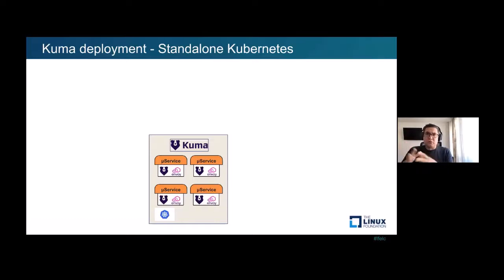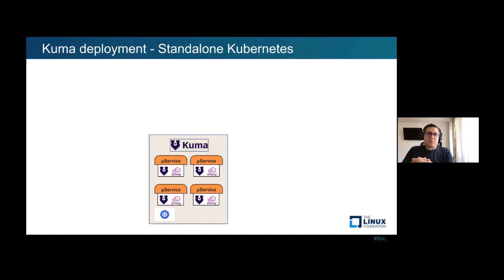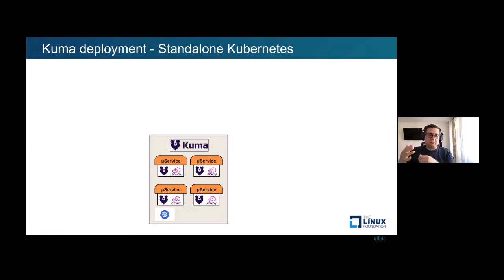The most basic deployment is standalone Kubernetes. You deploy your Kubernetes cluster, then use one of the Helm charts or the Kuma command line deployment methods to enable the Kuma service mesh. Once deployed, you annotate your namespace with a specific annotation, and this allows the Kuma Kubernetes controller to start injecting the Kuma data plane as a sidecar — leveraging the sidecar pattern. That's how you get your Kubernetes cluster enabled with the service mesh.